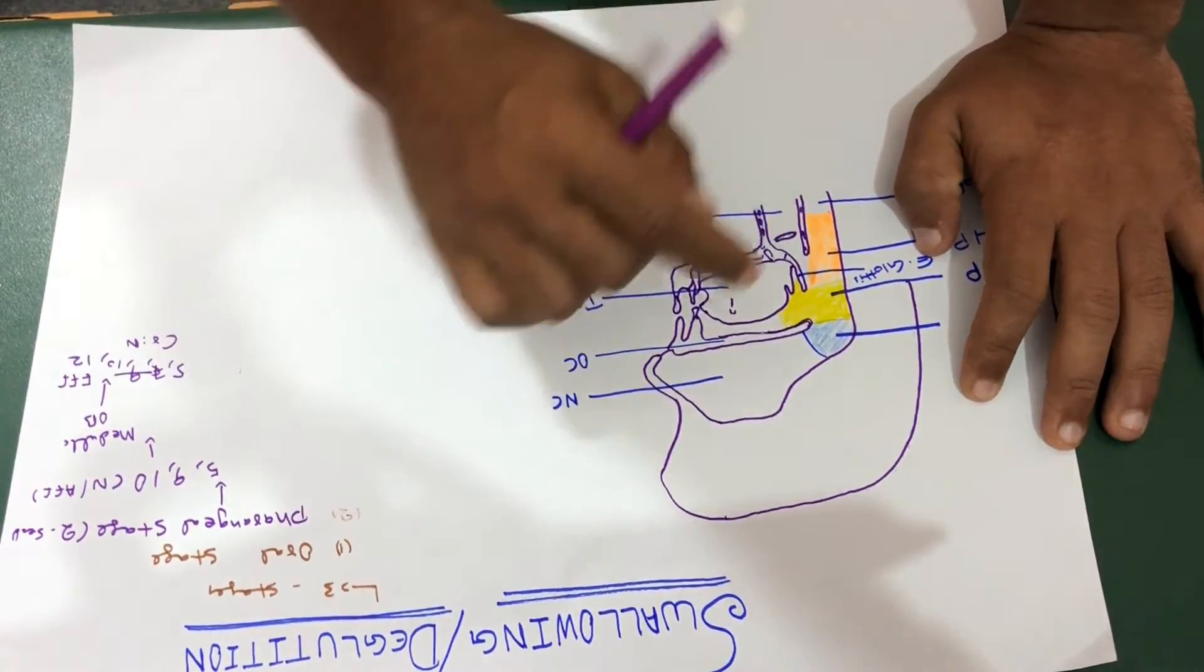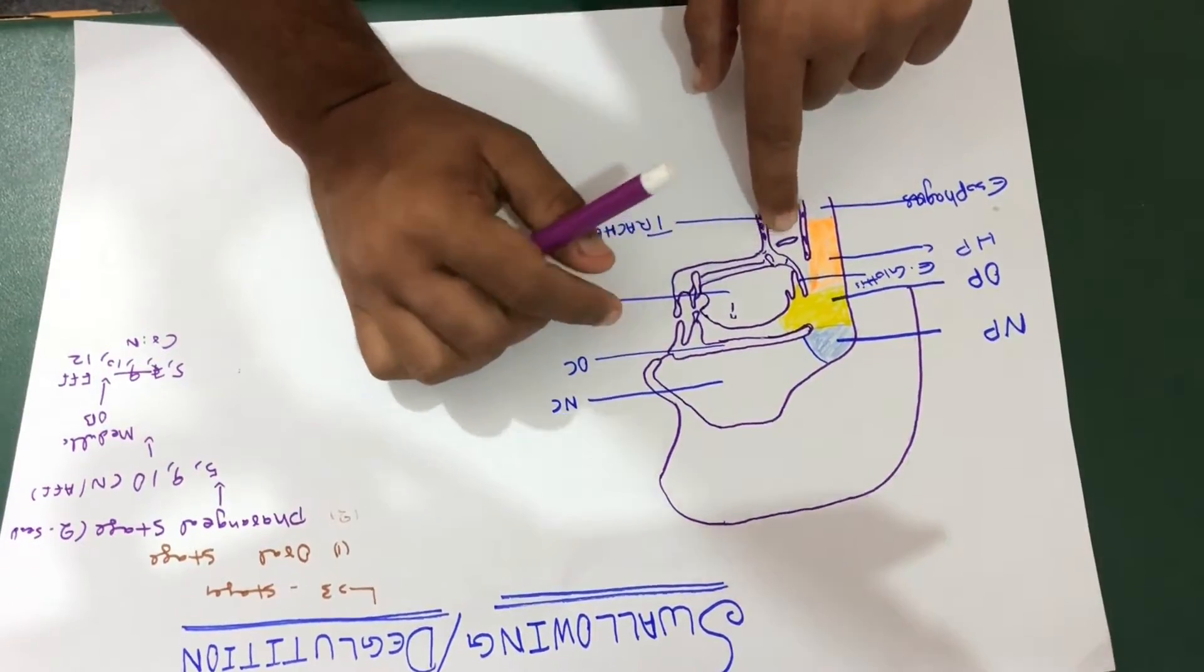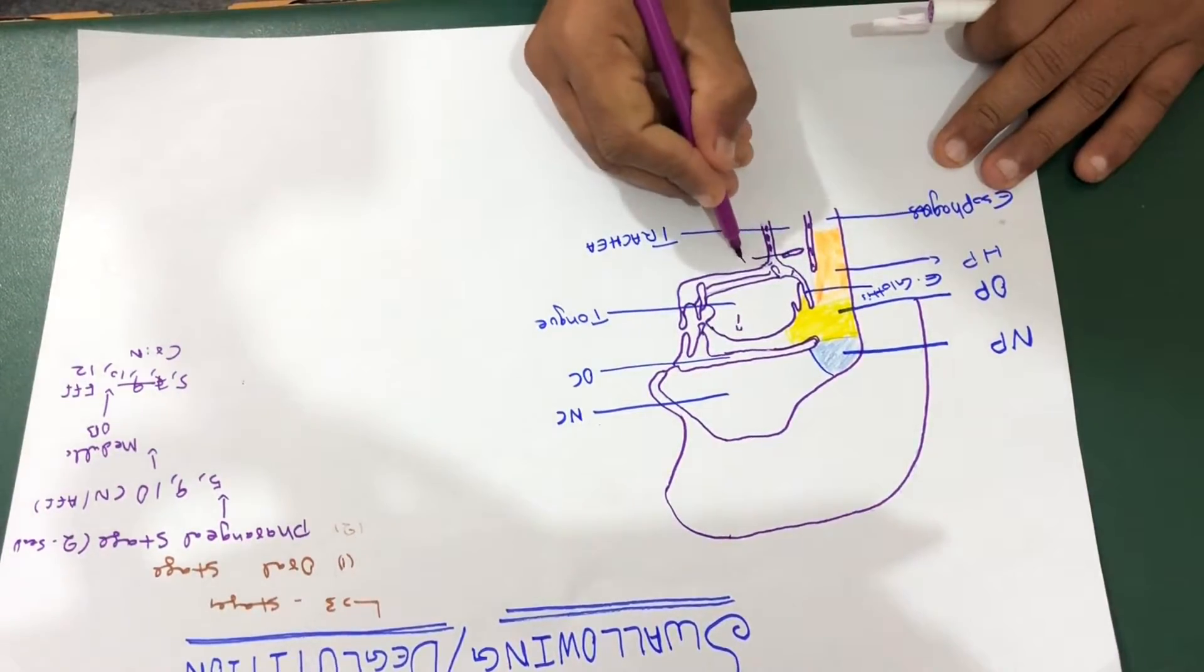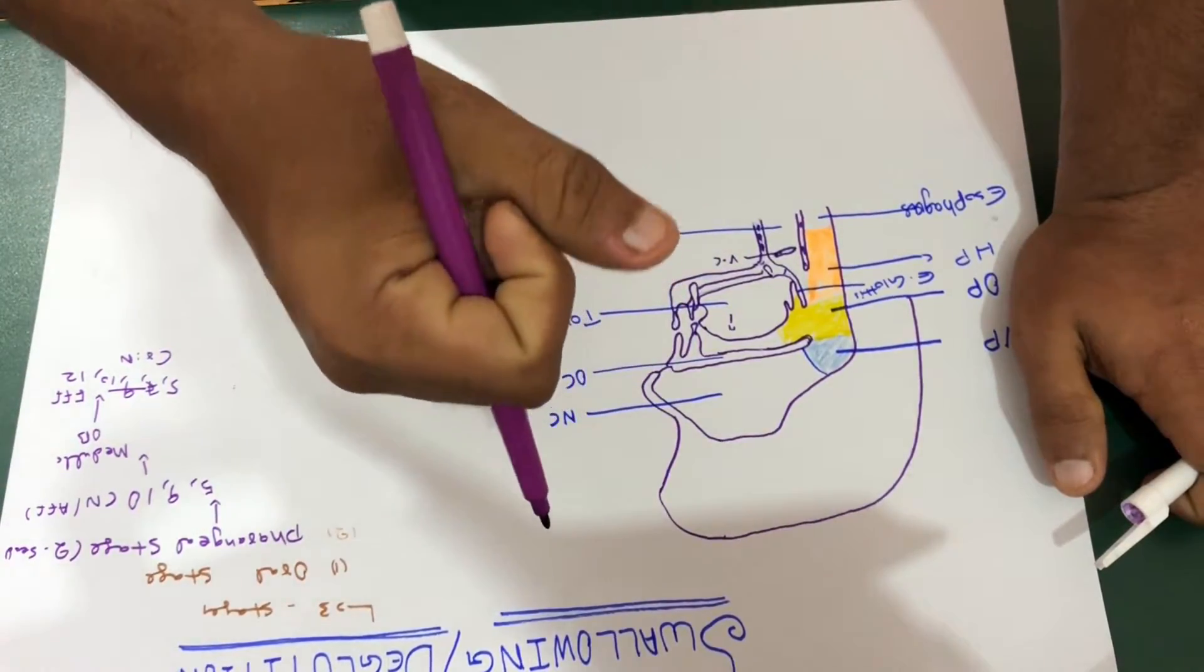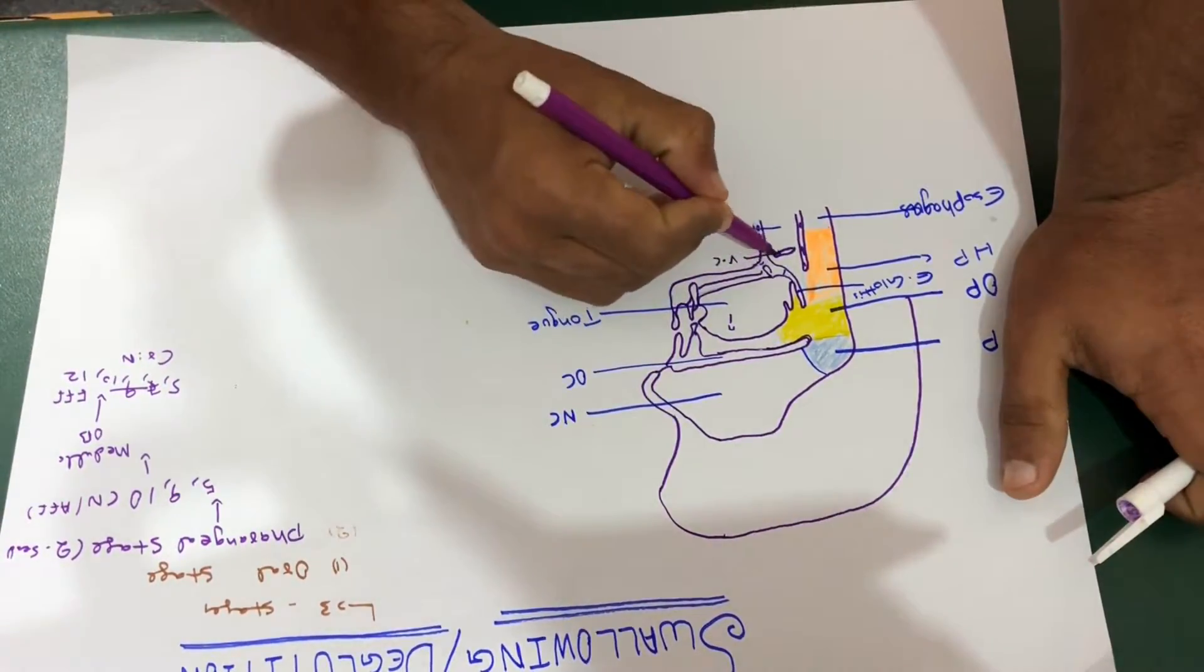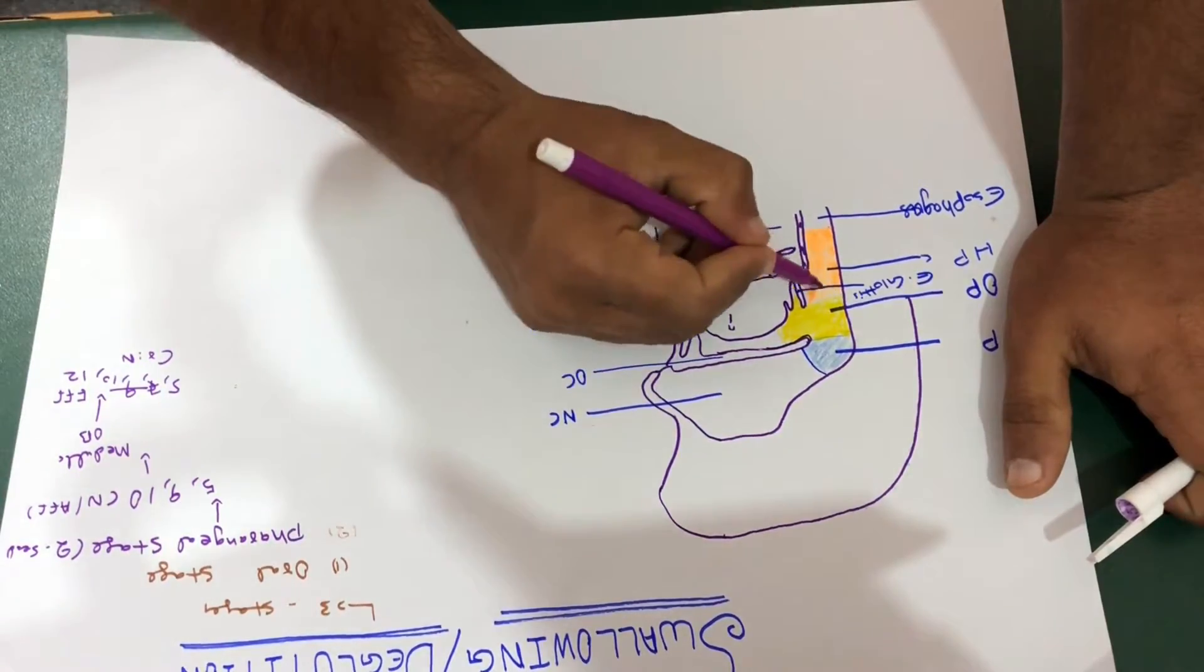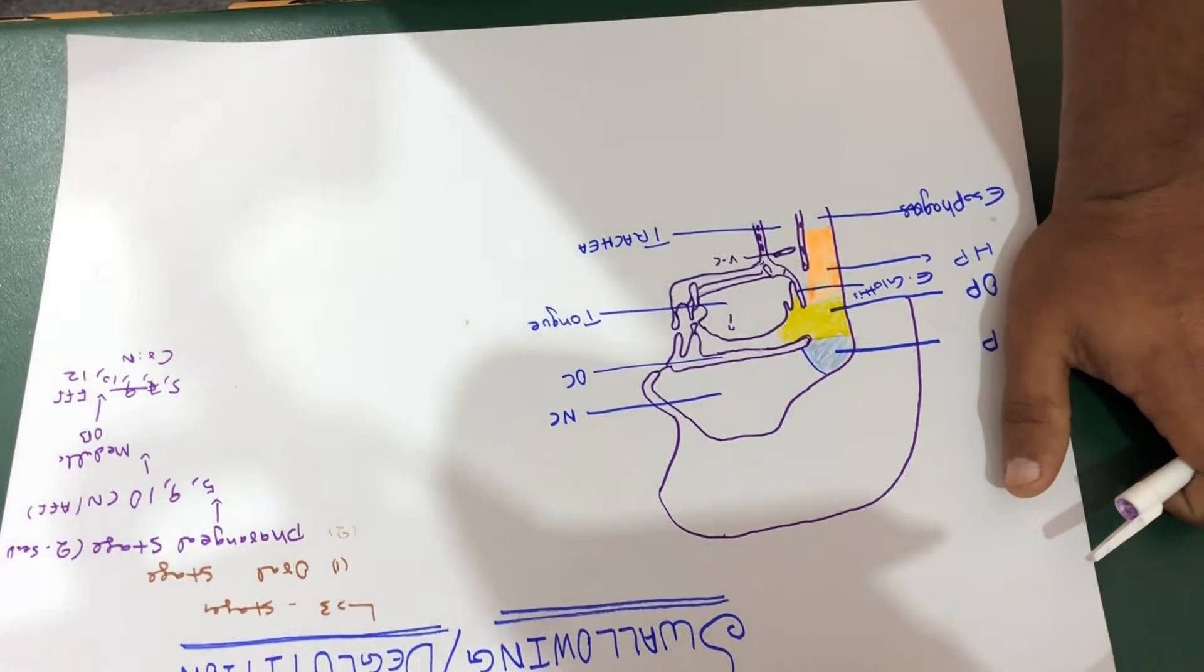After that, the vocal cords are also approximated. This is your vocal cord. Your larynx is over here, the vocal cord and your larynx. Larynx is also pulled upward and anteriorly by neck muscles.